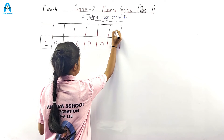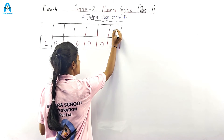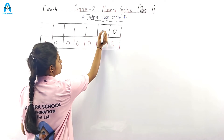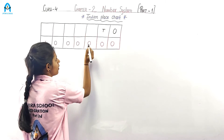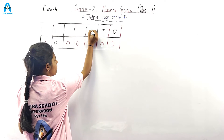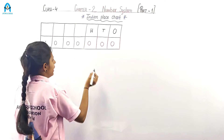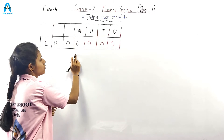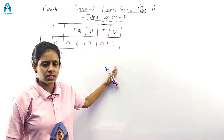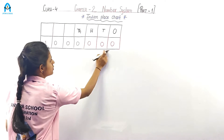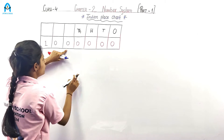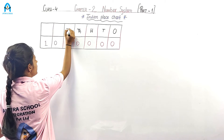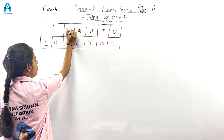Starting from the right: this is the ones place. Next is the tens place. Next is hundreds, and then thousands. We learned these in our previous class. Now, the fifth digit place is called ten thousands.